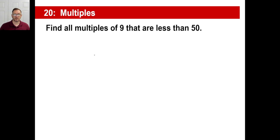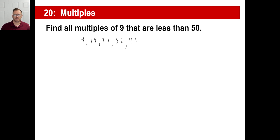They'll ask you things like: find all multiples of 9 that are less than 50. A multiple of 9 starts with 9, then 18, 27, 36, 45. The next one is 54 — that doesn't count, it's not less than 50. So those are the multiples of 9 less than 50.